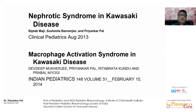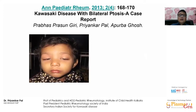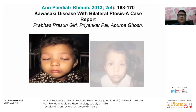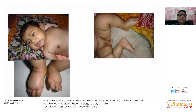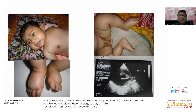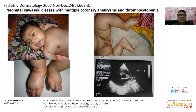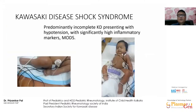Unusual presentations include nephrotic syndrome and macrophage activation syndrome. We had a patient with bilateral ptosis who showed improvement on receiving IVIG. A notably early case was a 22-day-old neonate who presented with fever for seven days, mucositis, rashes, and unexplained edema — and had giant aneurysms on echocardiography. This is one of the earliest reported patients of Kawasaki disease.